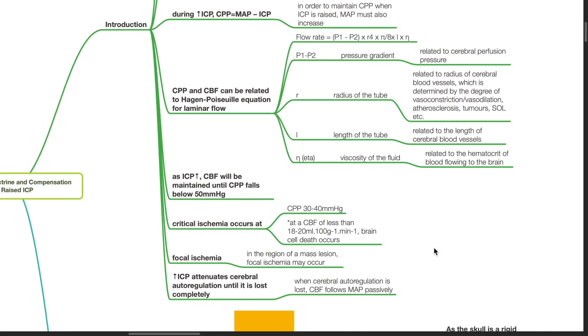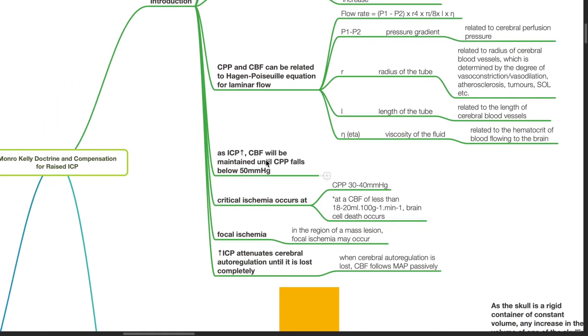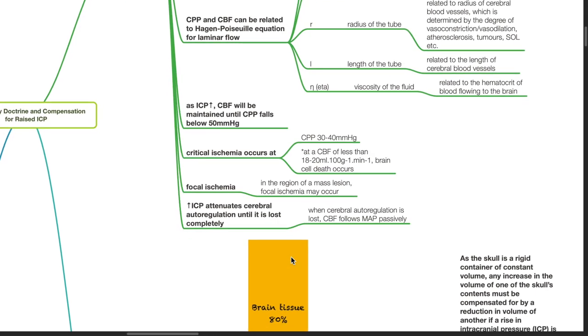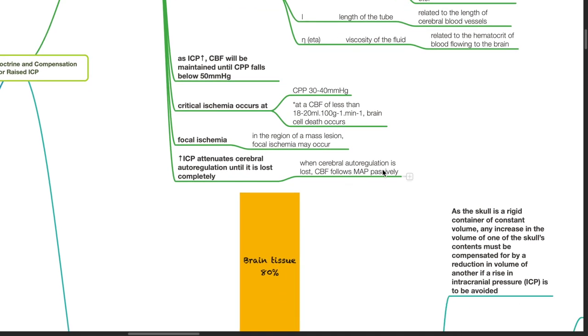As ICP increases, cerebral blood flow will be maintained until CPP falls below 50 mmHg. Cortical ischemia occurs at cerebral perfusion pressure of 30 to 40 mmHg. At a CBF of less than 18 to 20 mmHg per 100 g per minute, brain cell death occurs. Focal ischemia in the region of a mass lesion can occur. Increased ICP attenuates cerebral autoregulation until it is lost completely. When cerebral autoregulation is lost, cerebral blood flow follows MAP passively.